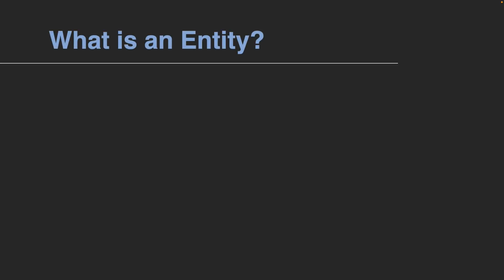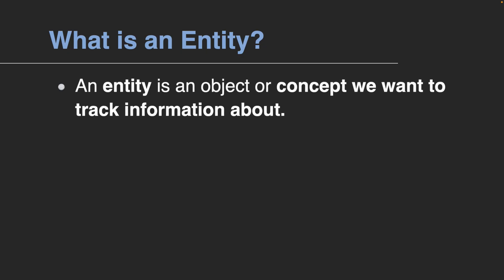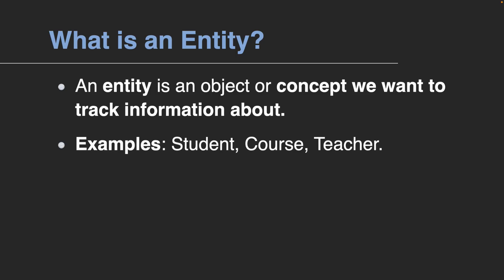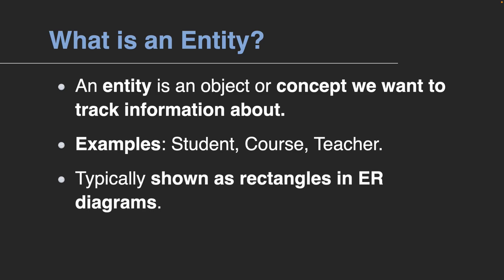The first building block is an entity. An entity is simply an object or concept we want to track information about. For example, a student, a course, or a teacher. In an ERD, entities are typically shown as rectangles.